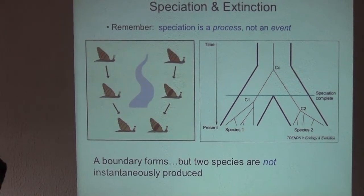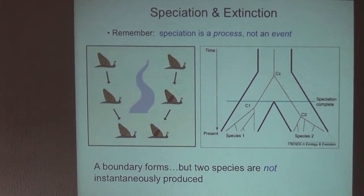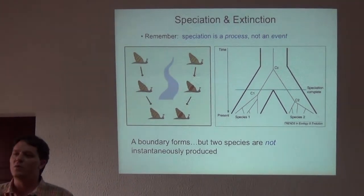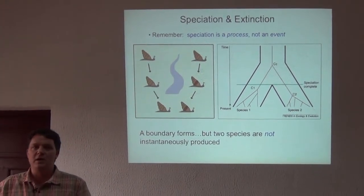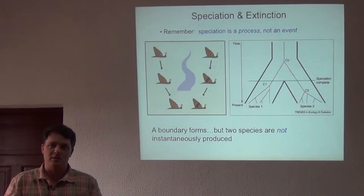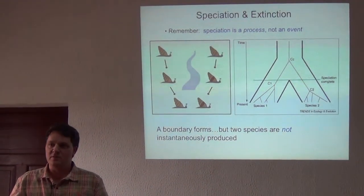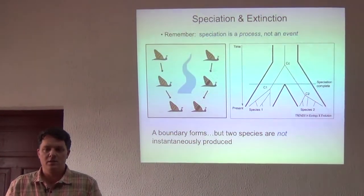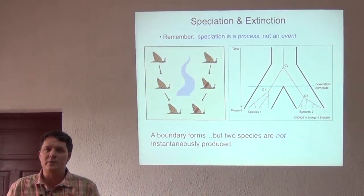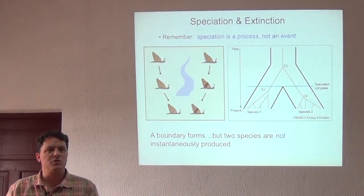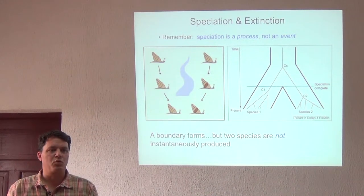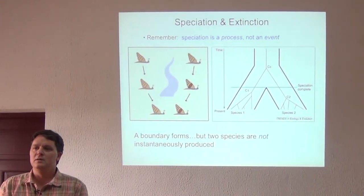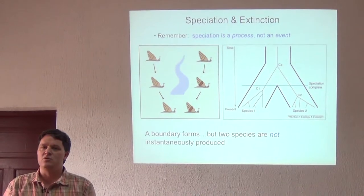Before going into how we can use trees to talk about classification, I want to make the point that speciation is best thought of as a process. It's something that happens through time as a result of different things. Sometimes people think of speciation as an event, and that's probably an improper way to think about it — we should think of speciation as a process that happens through time.